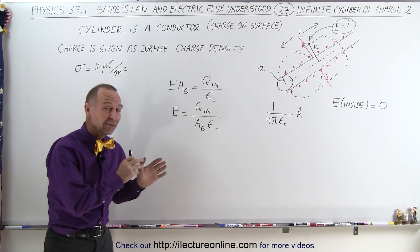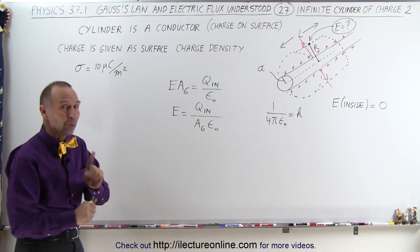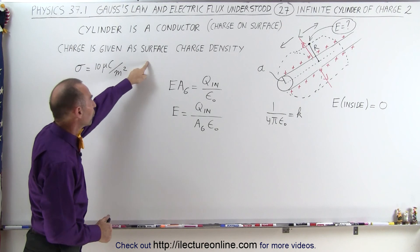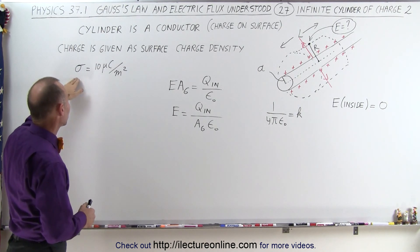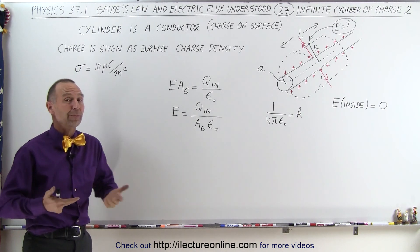Welcome to Electronline. In this example, notice it's exactly the same as we did in the previous video with one difference: in this case, the charge is given as a surface charge density instead of a linear charge density. So it's given to us in terms of so many microcoulombs per square meter instead of so many microcoulombs per meter.